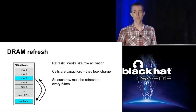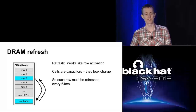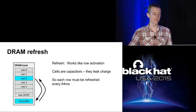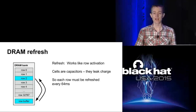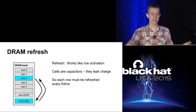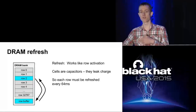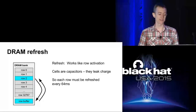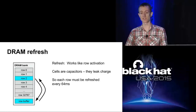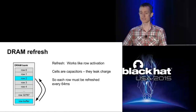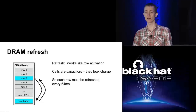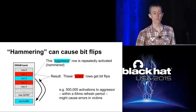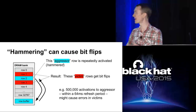Because cells are capacitors, charge tends to leak out of them, so the contents of cells have to be periodically refreshed - that's why it's called dynamic RAM. Refreshing a row works the same way as accessing it: the system reads a row into the row buffer and writes it back. The current standard is that a given row should be refreshed at least every 64 milliseconds, about 16 times a second. In other words, a cell has to hold its contents for at least 64 milliseconds.